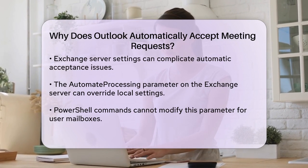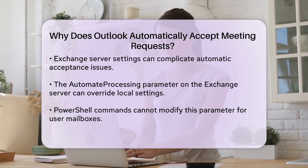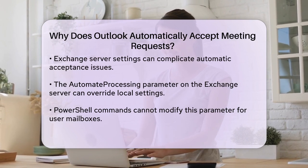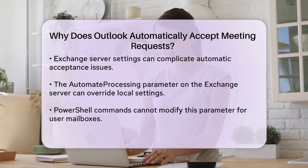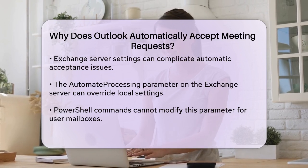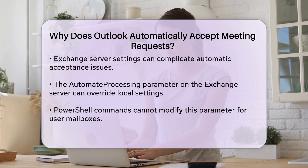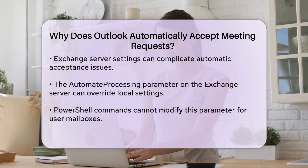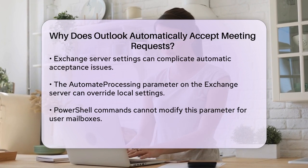When scheduling meetings, Outlook also uses the Scheduling Assistant to help find the best times for attendees. While this doesn't directly cause automatic acceptance, it can lead to confusion if the settings are not clearly understood. Ensuring that you're using the correct settings in the Scheduling Assistant can help avoid unexpected automatic acceptances.